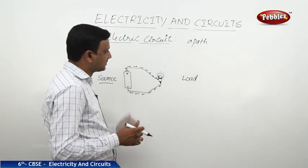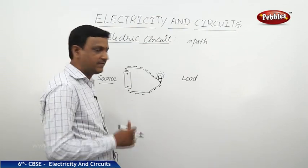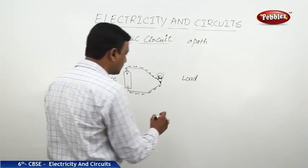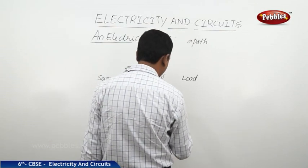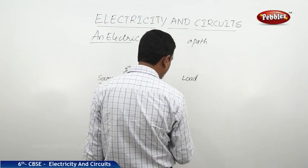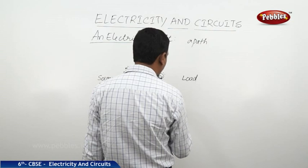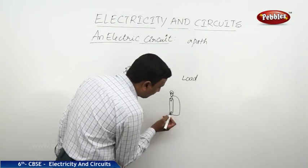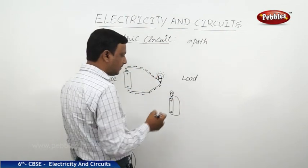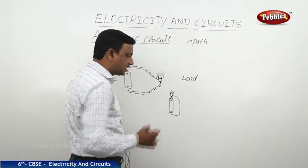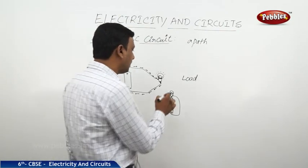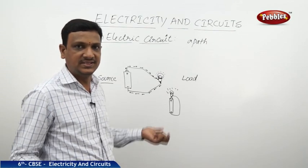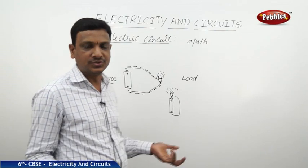We can make the circuit even simpler. Someone might ask: can we make this circuit without wire? Yes — you can take a cell with positive and negative terminals, fix a wire from the negative terminal to one terminal of the bulb, and then directly connect the other terminal of the bulb to the positive terminal of the cell. The bulb will glow and the circuit is complete.